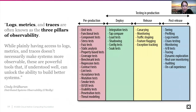As Cindy Sridharan says, while plainly having access to logs, metrics, and traces doesn't necessarily make systems more observable, these are powerful tools that, if understood well, unlock the ability to build better systems. This matters because it optimizes pre-production pipelines — unit tests, functional tests, performance tests, fuzz tests, all kinds of testing, as well as threat modeling and security testing — all are affected by our ability to have more observable data and self-correct behavior of systems that are out of whack.